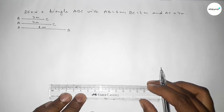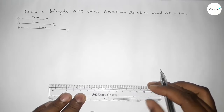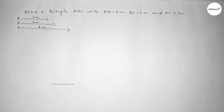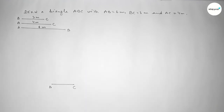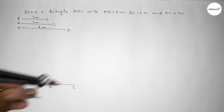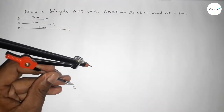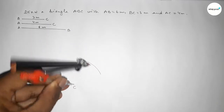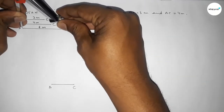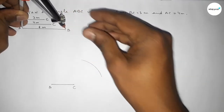First, draw a line of length 3 centimeters starting from zero to three, marking points B and C. Now take the length AC equal to 4 centimeters, put the compass on C, and draw an arc. Then take the length AB equal to 6 centimeters using the compass.